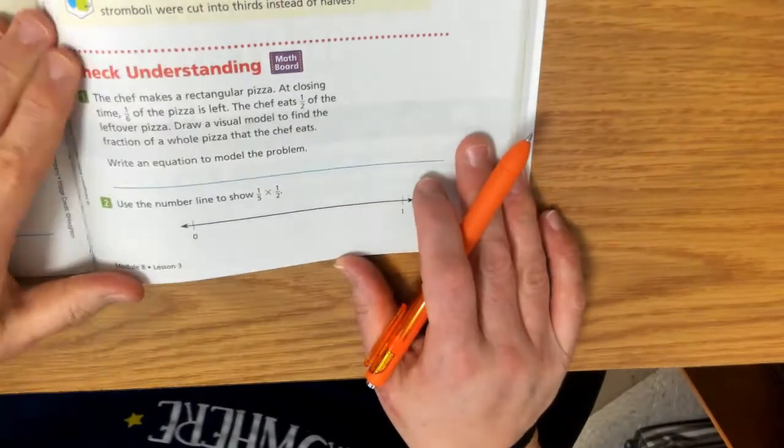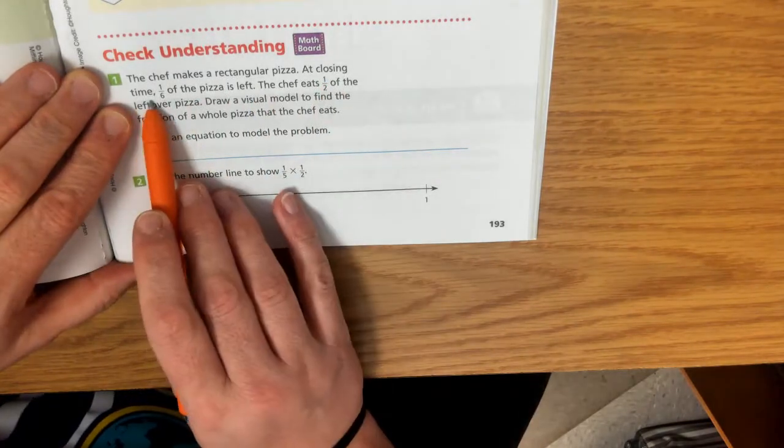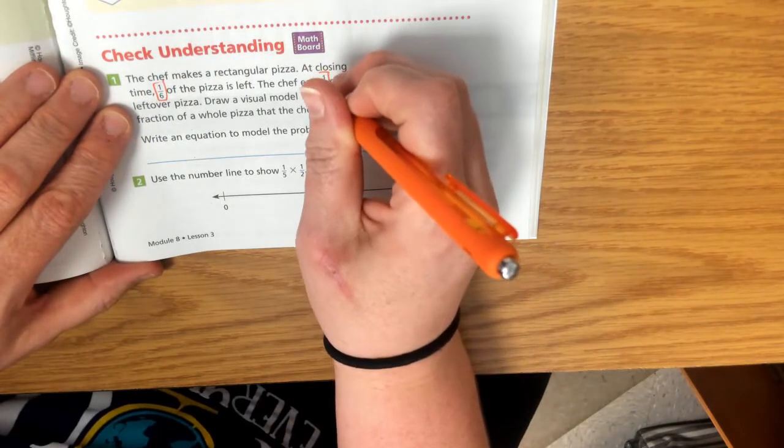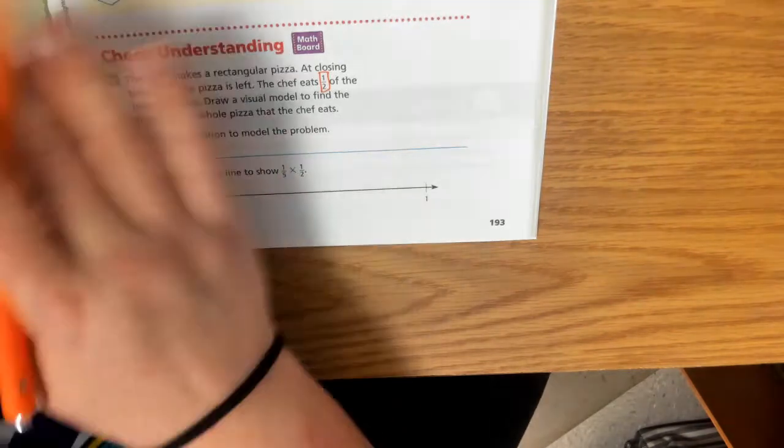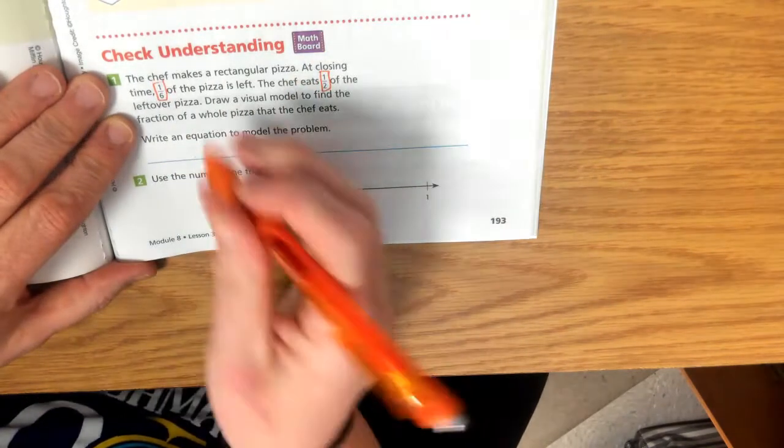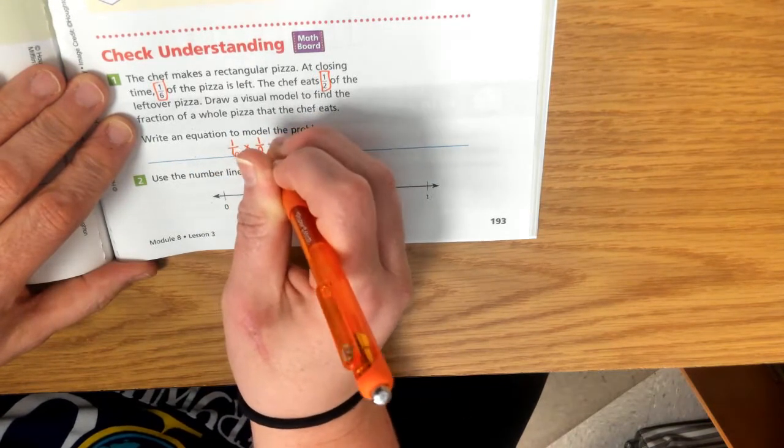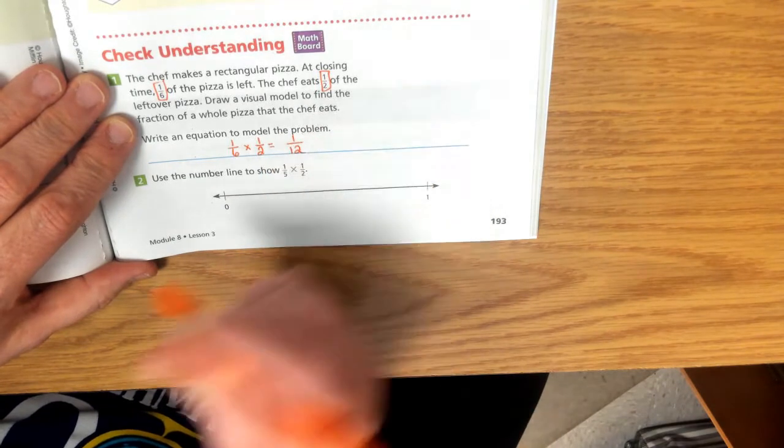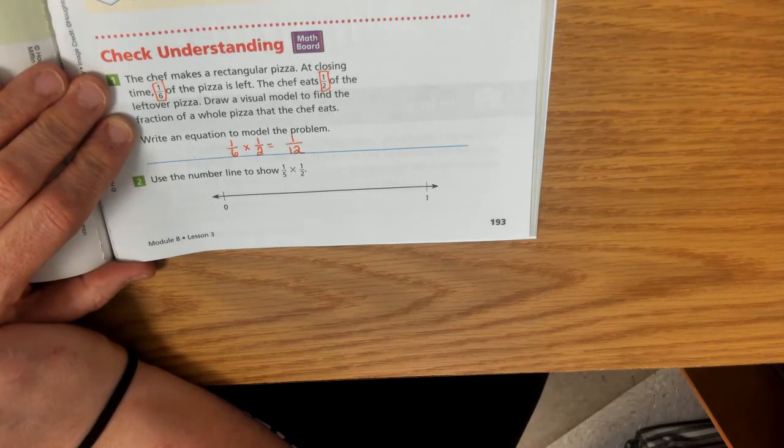So if we're not going to worry about using the number line, we're just going to do our multiplication. The chef makes a rectangular pizza. At closing time, one-sixth of the pizza is left. The chef eats one-half of the leftover pizza. Don't worry about the visual model, because now we know how to do the equation. So one-sixth times one-half equals one-twelfth. So one-twelfth of the pizza is left.